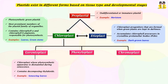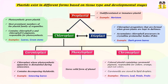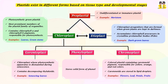Gerontoplast is a chloroplast whose photosynthetic apparatus is dismantled during senescence; it contains decomposing thylakoids and is found in senescing leaves. Phenyloplast stores solid forms of phenol. Chromoplast is a carotenoid pigment-accumulating plastid responsible for the yellow, orange, and red colors of flowers and fruits, and contains lipid droplets in which carotenoids are stored.